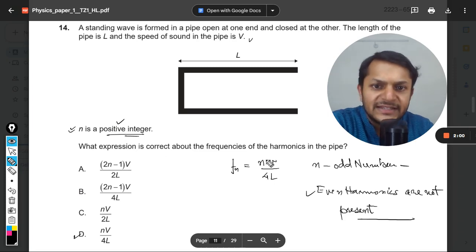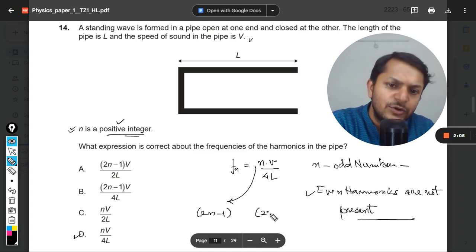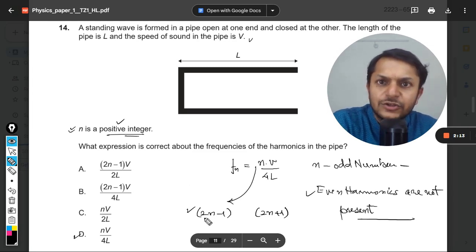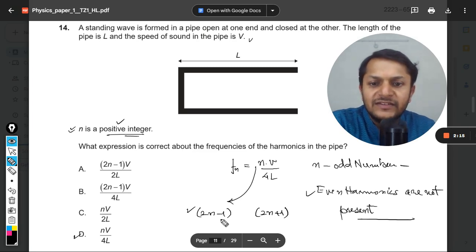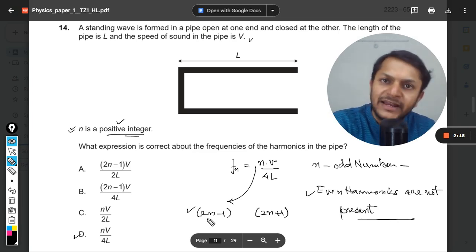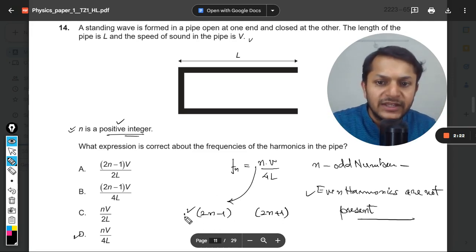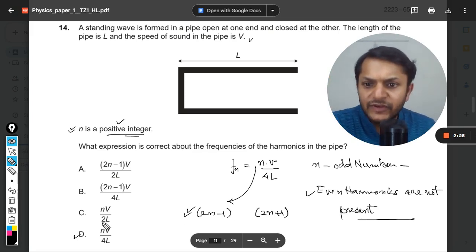Replace N with 2N minus 1. Yes, you can have 2N plus 1 also, no doubt about that, but 2N minus 1 is more often used. So let's say N equals 1, then 2 minus 1 will be 1. If N equals 2, it will be 2 times 2, which is 4 minus 1, that's 3. So only odd numbers. 2N minus 1 is the general expression for odd numbers. So we want it to be odd numbers only. So we will replace N with 2N minus 1.